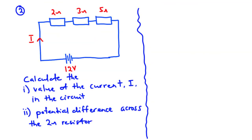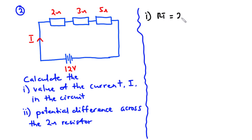In the second question we have a simple electrical circuit. We are supposed to find part i: the value of the current i in the circuit, and the potential difference or voltage across the 2 ohm resistor. For this circuit we have a 12 volt DC source and three resistors — 2 ohm, 3 ohm, and 5 ohm — connected in the circuit. To find the value of i we need to find the total resistance. These three resistors are connected in series, so the total resistance Rt equals 2 plus 3 plus 5, which is equal to 10 ohms.